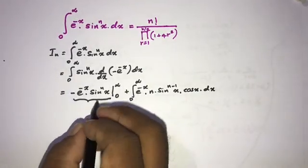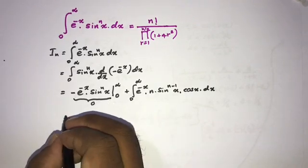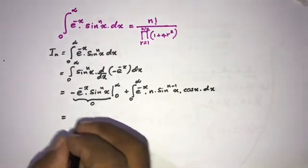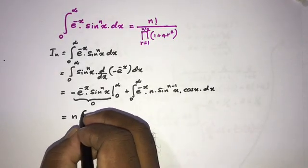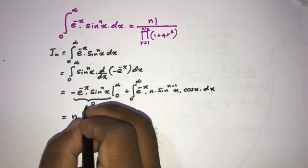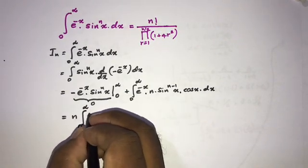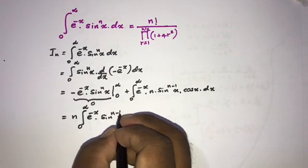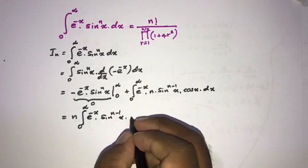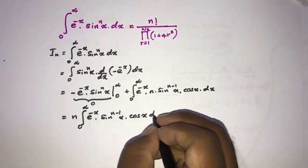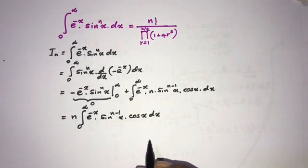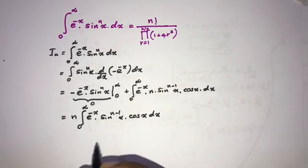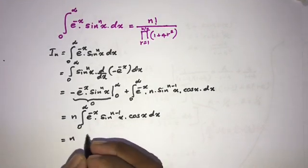When we plug in infinity, this boundary term goes to zero. Since n is a constant, we can write it outside the integral sign, giving n times the integral from zero to infinity of e to the minus x times sine to the n minus 1 of x times cosine of x dx.